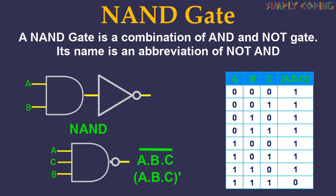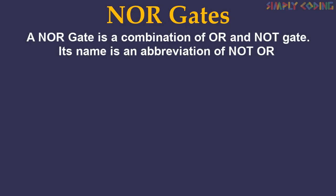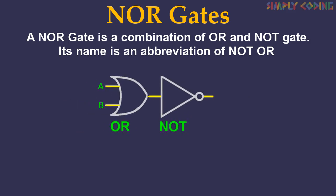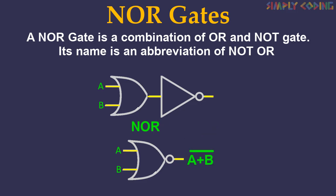Now let's see the NOR gate. A NOR gate is a combination of OR and NOT gate. In this, a NOT gate is applied to the output of an OR gate. Its name is an abbreviation of NOT OR. NOR operation is shown using an OR gate with a small circle on the output. The small circle represents the inversion of the OR gate. The NOR gate represents the complement of the OR operation.